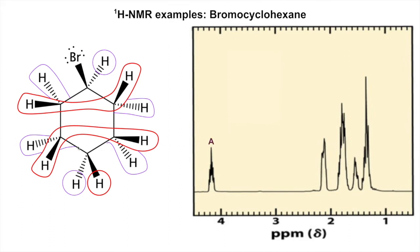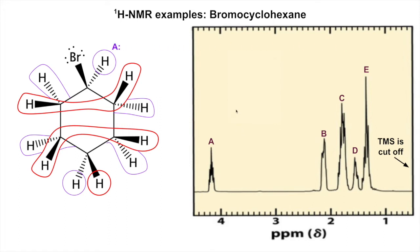Let's label the spectrum: the most downfield is signal A, then B, C, D, E. TMS should be just off the left of the scale. Signal A you might guess because it's next to the bromine. We're going to learn soon that electronegative atoms like bromine cause deshielding and make their signals go more downfield. For the other signals, I'm going to call them signal B, C, D, or E and represent any particular grouping as X - we don't know the exact assignment yet.